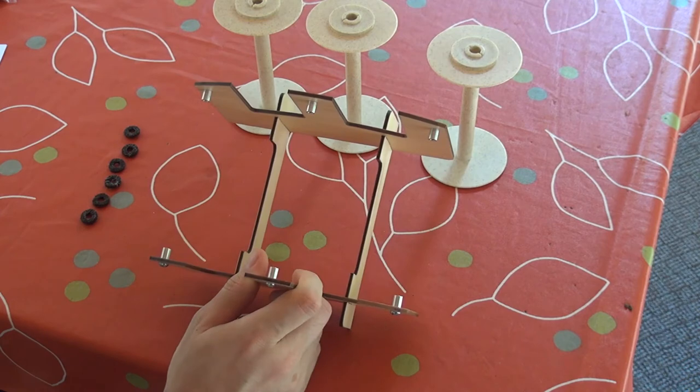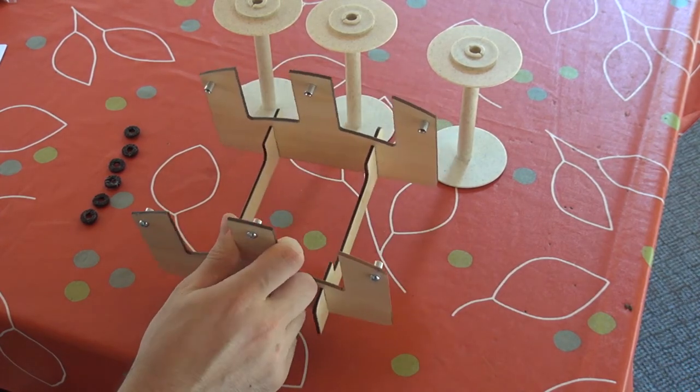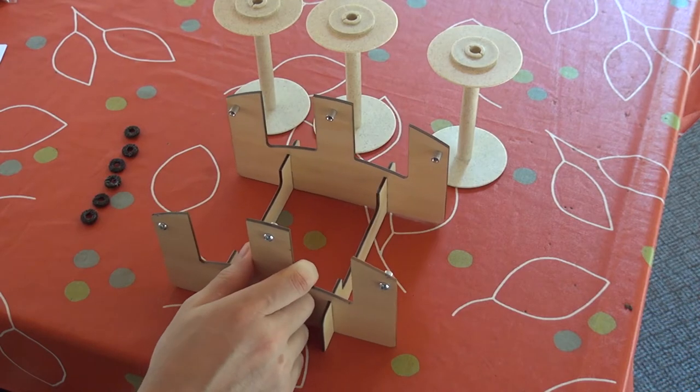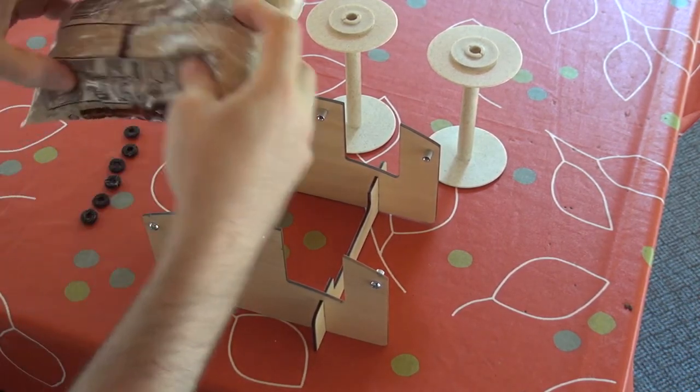A lot of thought went into this Lazy Kate design. One of the things we wanted to make sure is that it's very light and easy to transport, but that also means that it might move around too much when you actually have the bobbins in there and they're spinning with it.